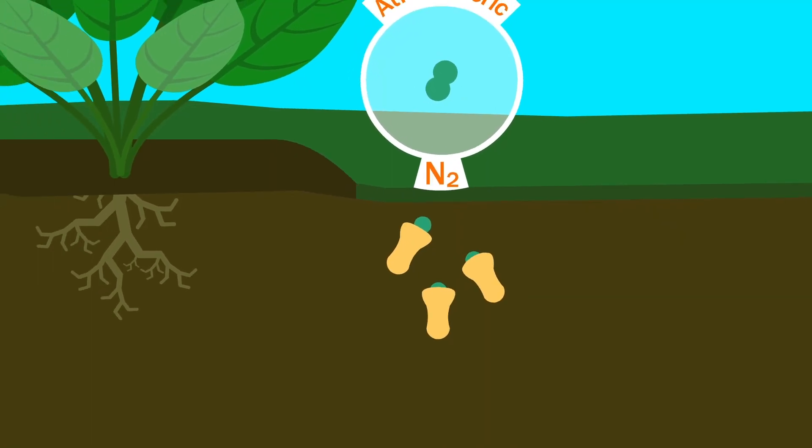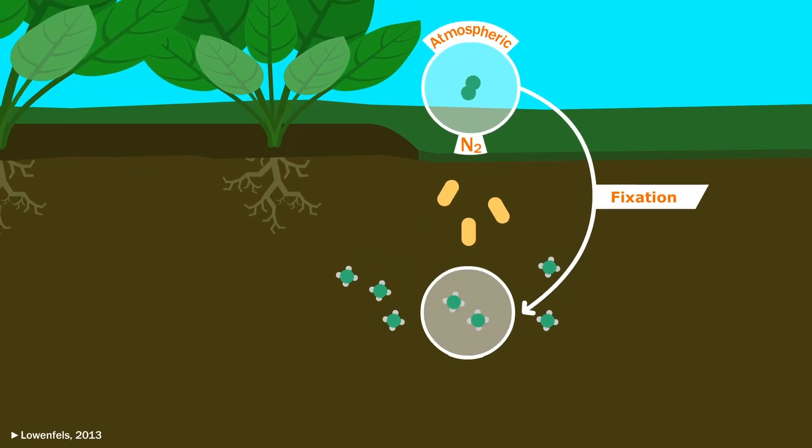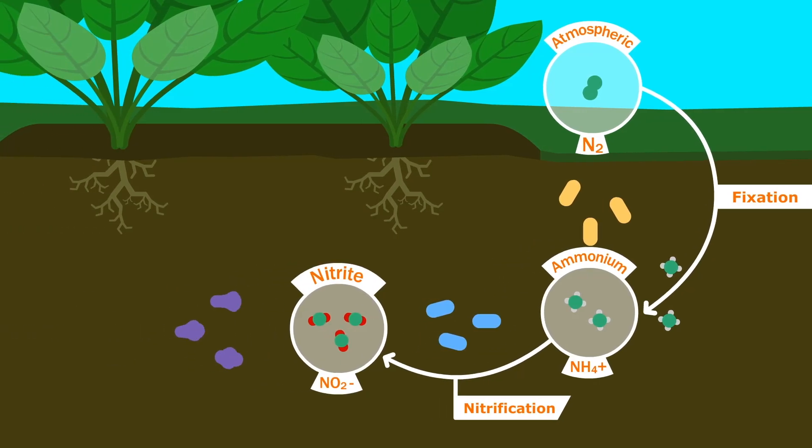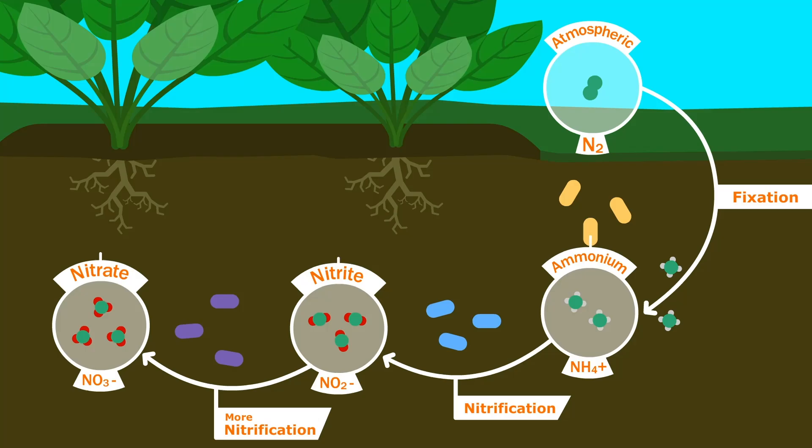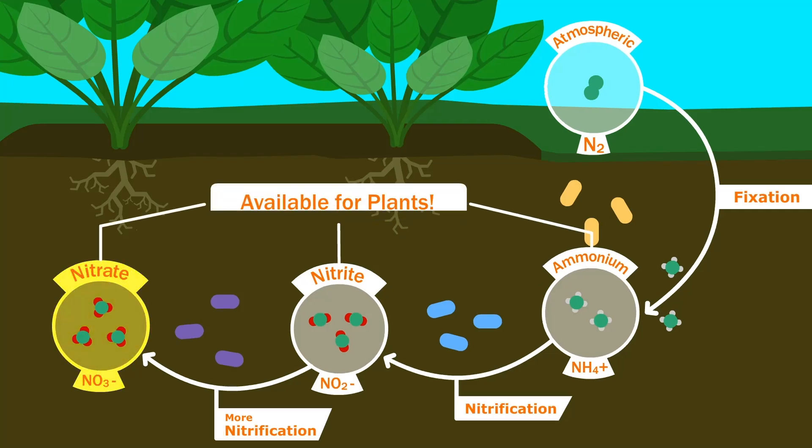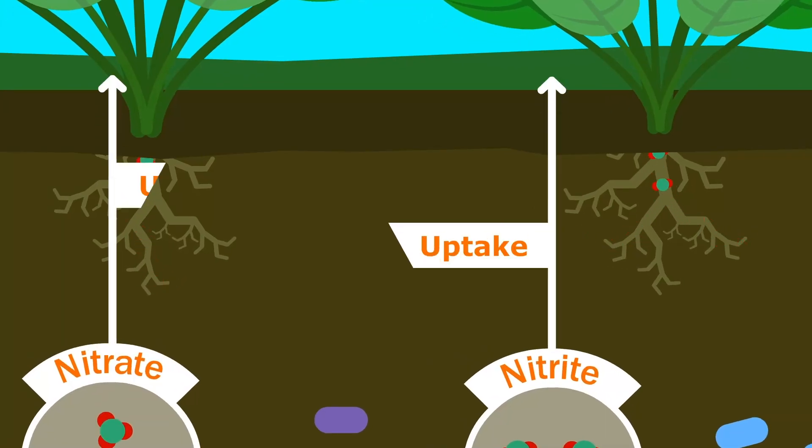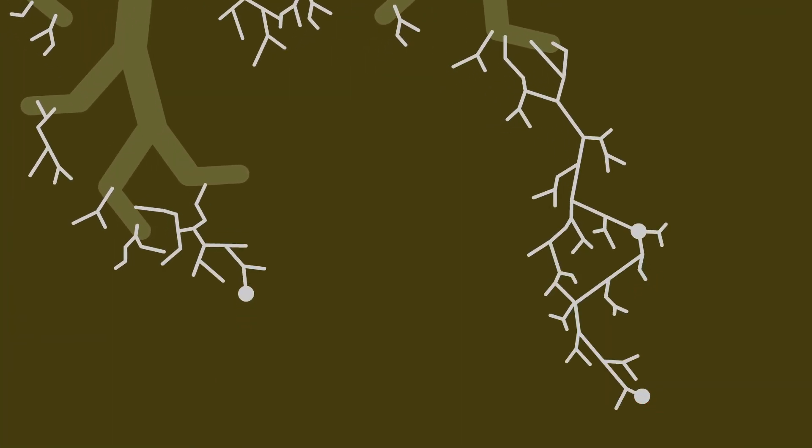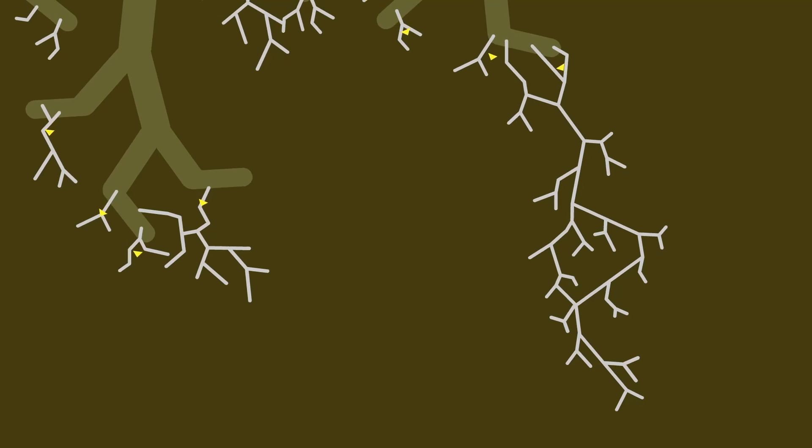Various species of bacteria eat atmospheric nitrogen and poop out ammonium. This gets eaten by other kinds of bacteria, which poop out nitrite, which gets eaten by yet another kind of bacteria, which poops out nitrate. All of these forms of nitrogen are available for plants, especially nitrate, which is the easiest for plants to use. Plants can take this up directly if it is near their roots, but they most often rely on strands of fungi that attach to their roots and bring nutrients to them in exchange for the sugars and carbohydrates the plant roots exude.